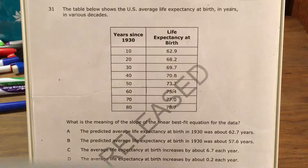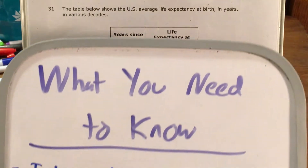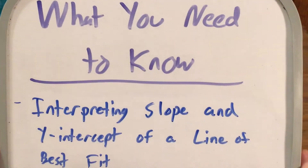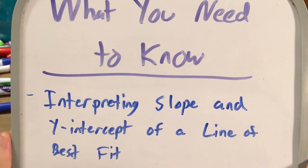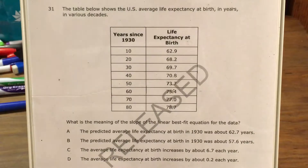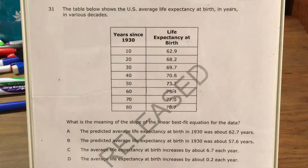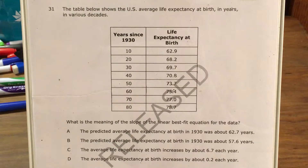We're trying to figure out the meaning of the slope of the linear best fit equation for the data. The big skill that this is testing is, in general, how to interpret the slope and y-intercept of a line of best fit. The question tells us we're only interested in slope.